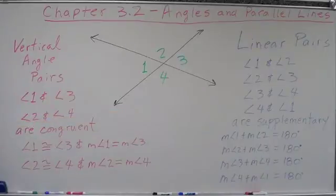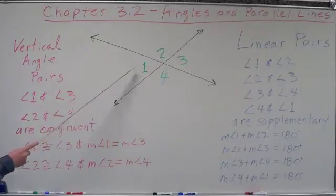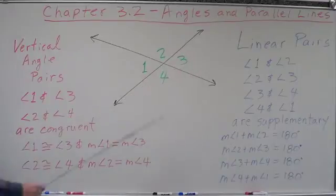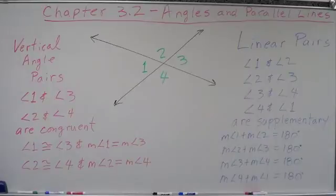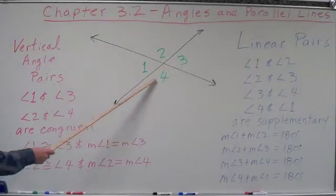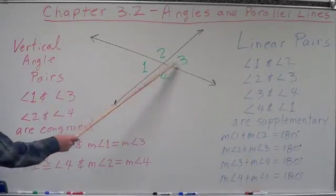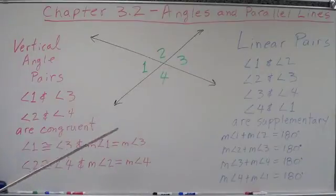Vertical angle pairs are the non-adjacent angles of two intersecting lines. One and two are adjacent — which ones are not adjacent? One and three are not adjacent. Two and four are not adjacent. Non-adjacent means we do not share a common side. Vertical pairs will share a common vertex, but not a common side.